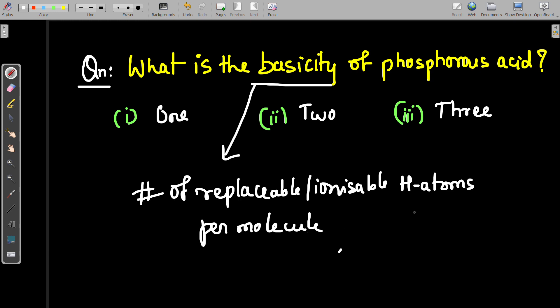So here phosphorus acid, what is the formula? H3PO3. Because there are three hydrogen atoms, you may think that the answer may be three, but the answer three is wrong. The correct answer is two.